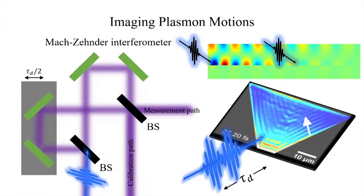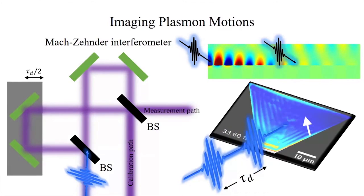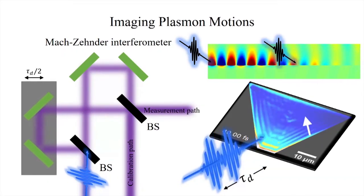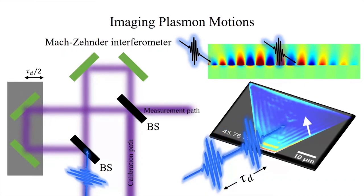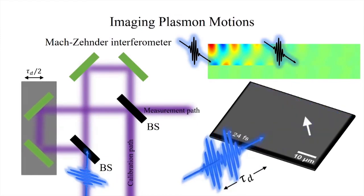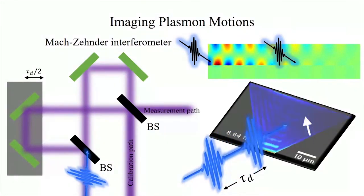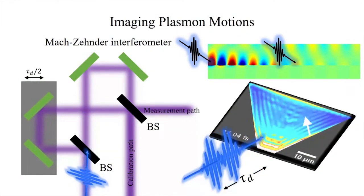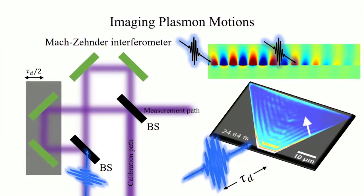Therefore, the probe beam can detect the motion of the plasmon field excited by the pump beam. By stacking the PEEM images acquired sequentially as we advance the pump-probe delay, we generate a movie of light propagating as surface plasmon polaritons on the silver-vacuum interface.